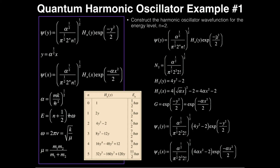The Gaussian function comes along for the ride: it's equal to the exponential of negative y squared over 2. Making the substitution y → alpha^(1/2) · x, the Gaussian can also be written as the exponential of negative alpha x squared over 2. Now with all three pieces, the wave function at the second energy level as a function of y is: normalization constant, times the Hermite polynomial (4y squared minus 2), times the Gaussian. That's the wave function as a function of y. Keep in mind that if you're doing probability integrals, you'll probably want to use a table of integrals.